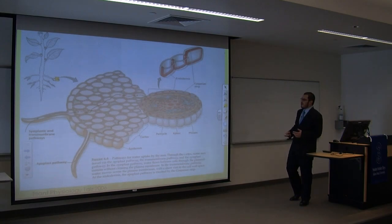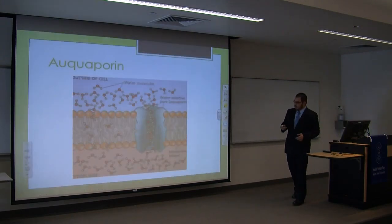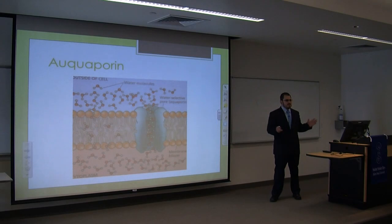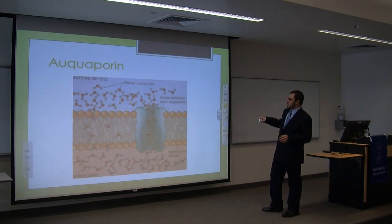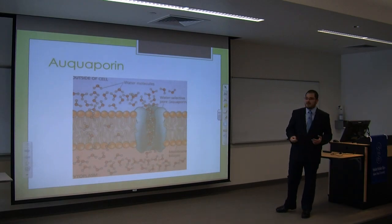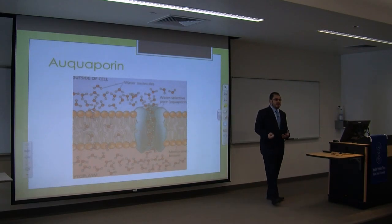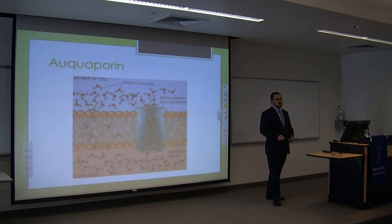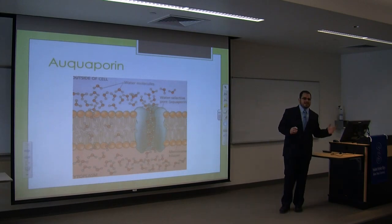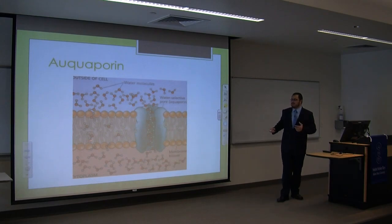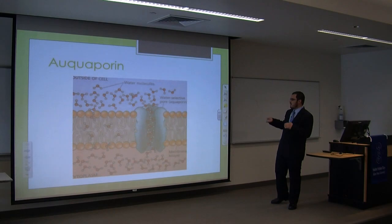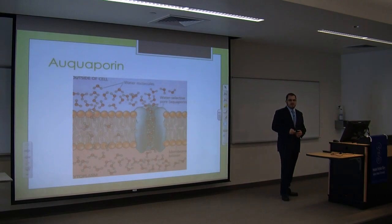Water enters through the root hair with the assistance of the aquaporin, which is a green protein bound within the cell membrane. The cell membrane has hydrophilic heads that really like water, and hydrophobic lipid tails that do not like water. So water on its own has a lot of trouble getting through that hydrophobic layer. The aquaporin helps get water and other nutrients into the cell, and this is what directly alters the hydraulic conductivity.